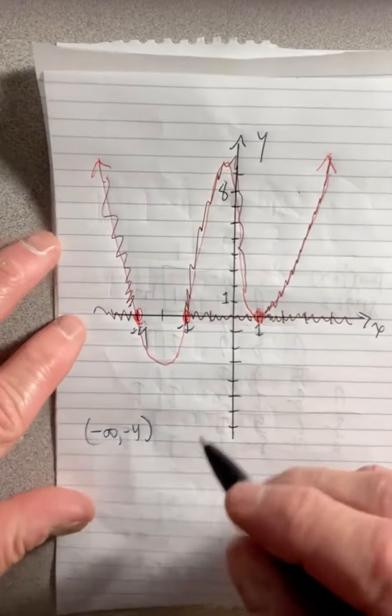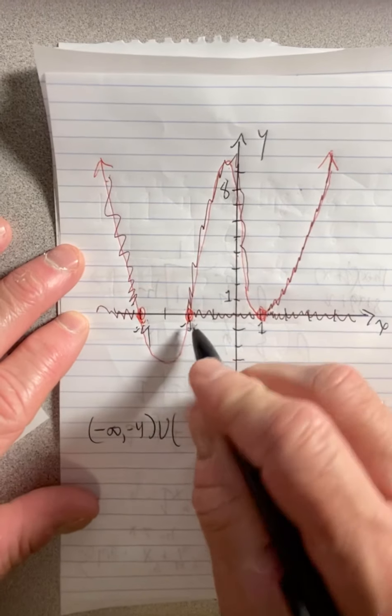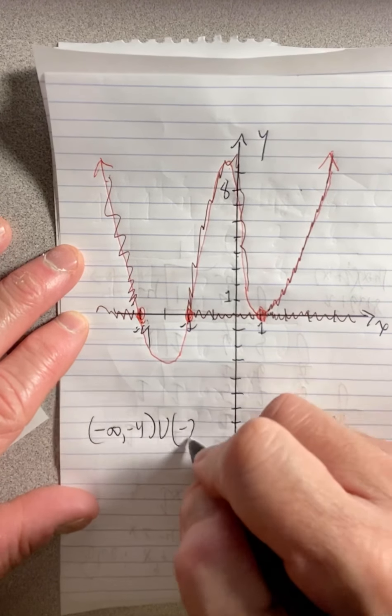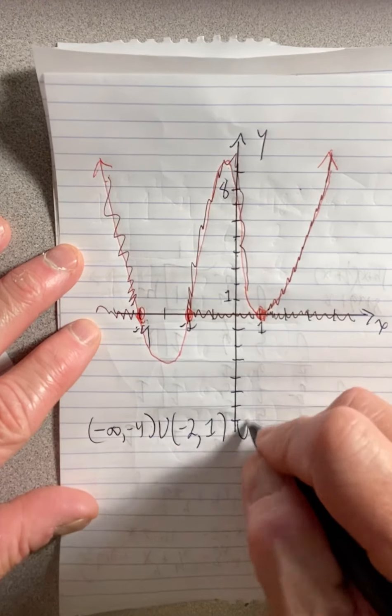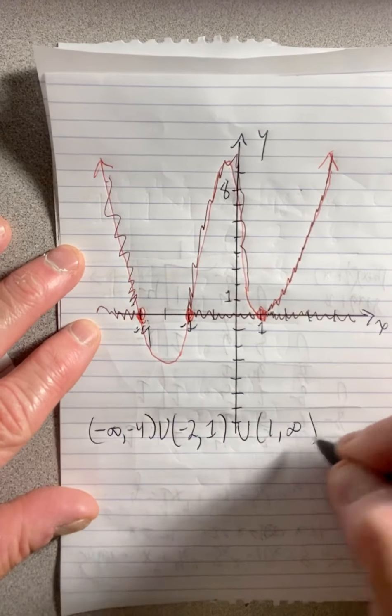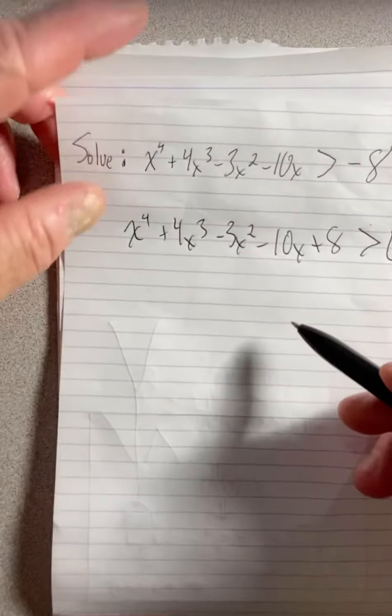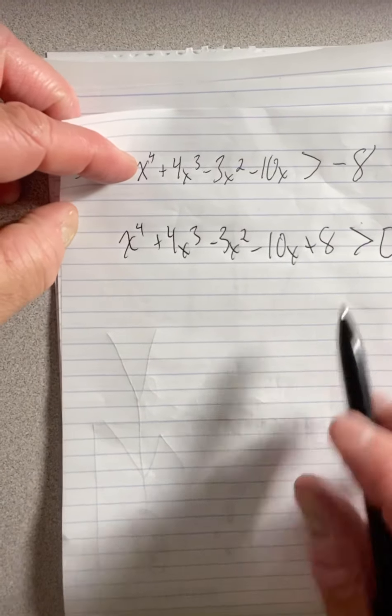Then from negative two to one. And it's not including one or negative two, because that's where it's zero. But then from one to infinity. So this is the solution set to this inequality here.